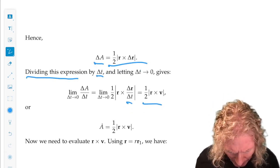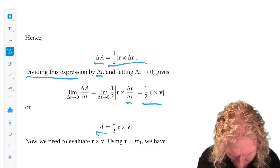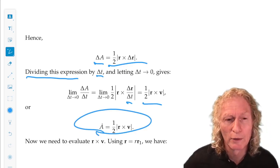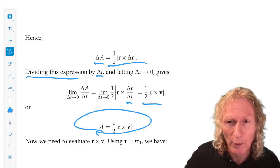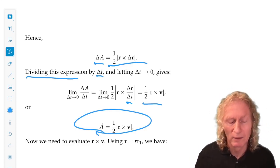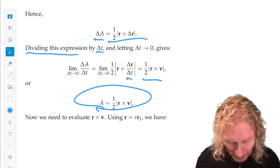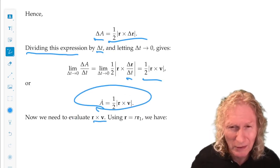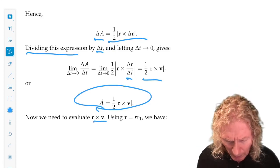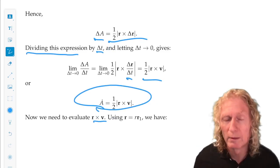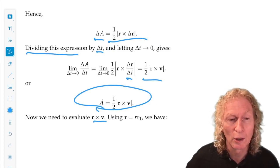That is the time rate of change of the area, sometimes called the areal (a-r-e-a-l) velocity. This is looking a lot like angular momentum, but let's evaluate this quantity in our polar coordinates.